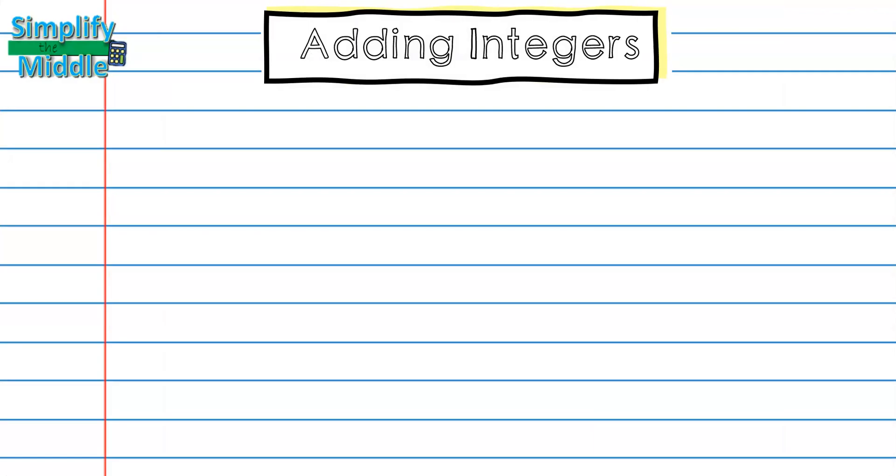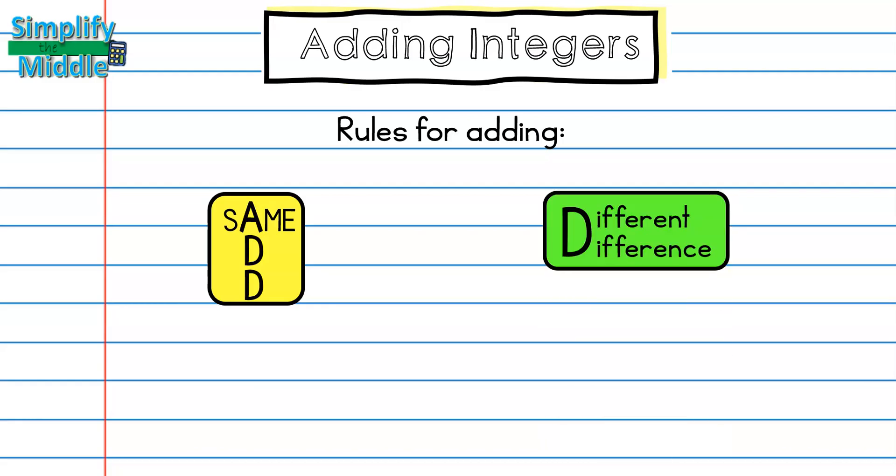So, we are going to be adding integers by following the algorithm, and our rules for adding are, if you have the same sign, you are going to add the digits and keep the sign. If you have different signs, you are going to find the difference, and difference means the answer to a subtraction problem.